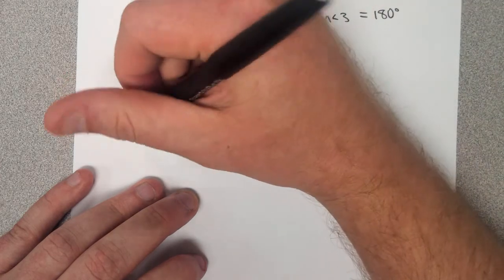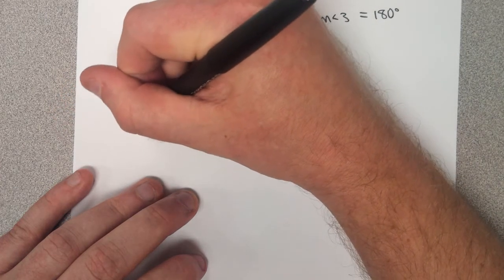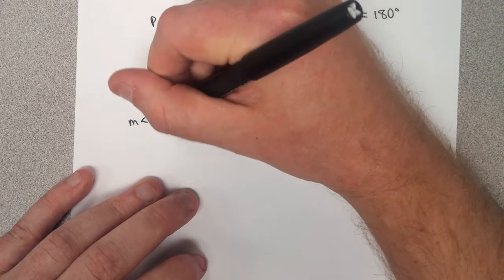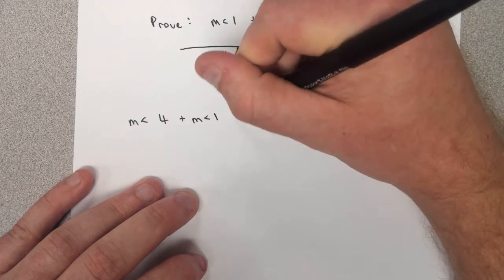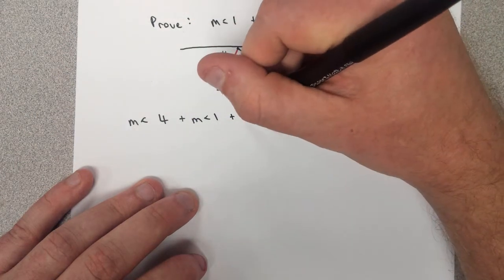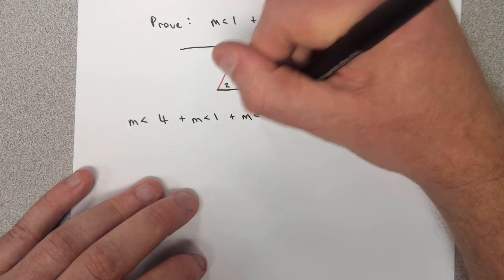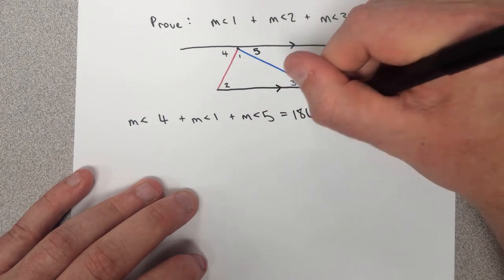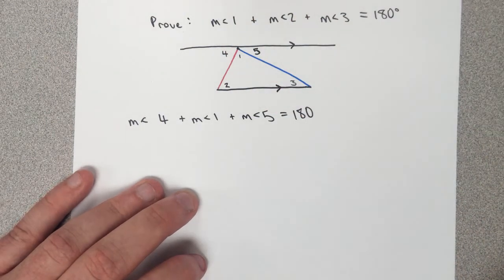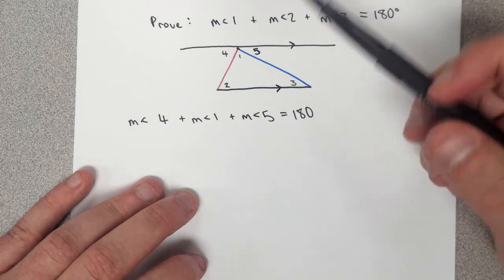So we could claim that the measure of angle 4 plus the measure of angle 1 plus the measure of angle 5 is equal to 180 degrees. We do get to claim that.